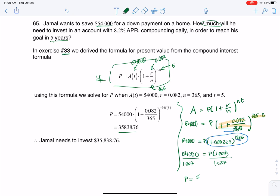if you float all of your decimal places, you do wind up getting that he needs $35,838.76 now, so that in five years, he can have $54,000.